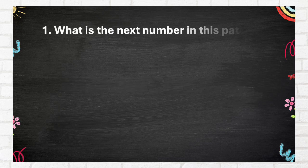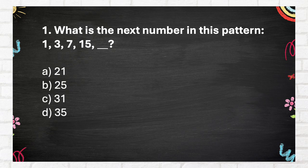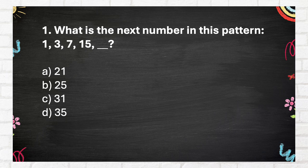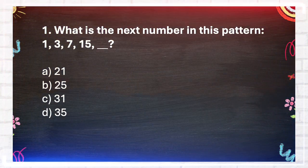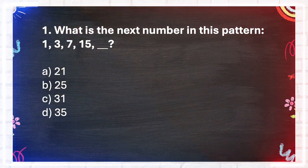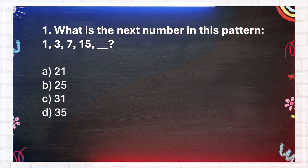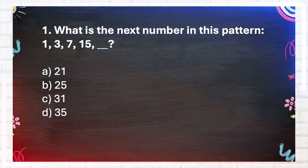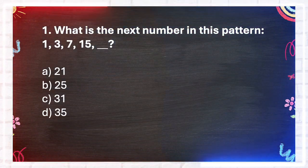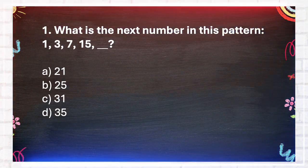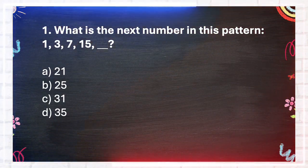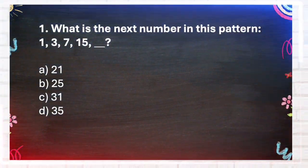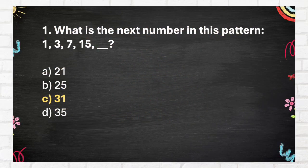Question number 1. What is the next number in this pattern? A 21, B 25, C 31, D 35. The answer is C, 31.